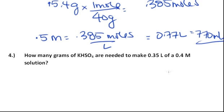In this next one, you need to find how many grams of potassium hydrogen sulfate are needed to make 0.35 liters of a 0.4 molar solution. So let's solve for how many moles are needed first. X over 0.35 liters. This gives you 0.14 moles,